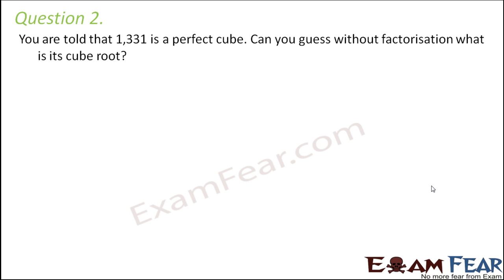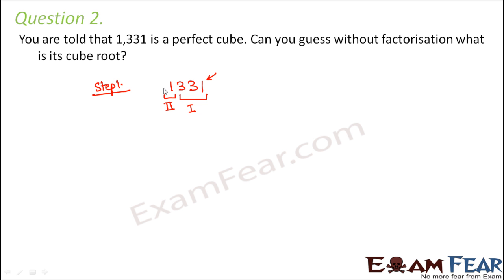Question 2: You are told that 1331 is a perfect cube. Can you guess without factorization what its cube root is? We'll use the estimation method. Step 1: take the number and find its units digit — it's 1. Divide it into groups of 3 from the right: group 1 is 331 and group 2 is 1. Step 2: focus on group 1 (331) — the units digit is 1, and cube of 1 always ends with 1, so the units digit of the cube root is 1.